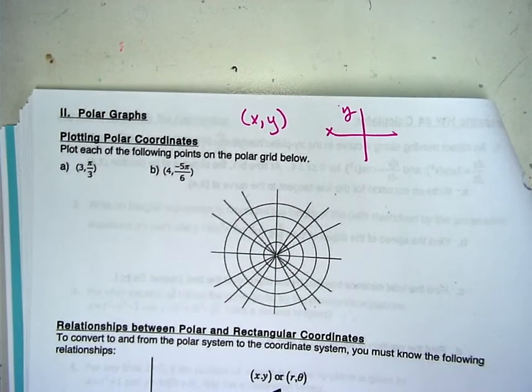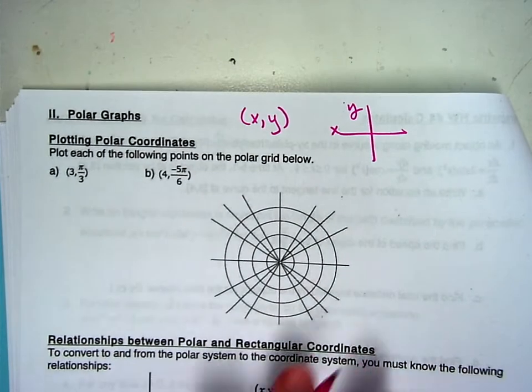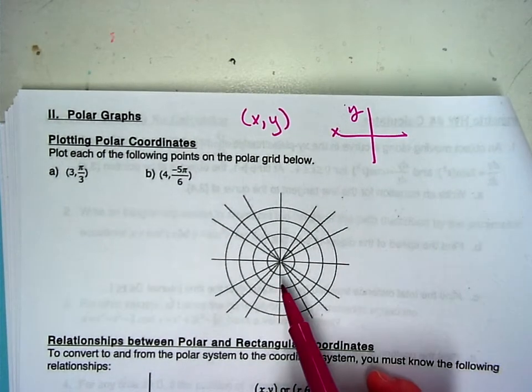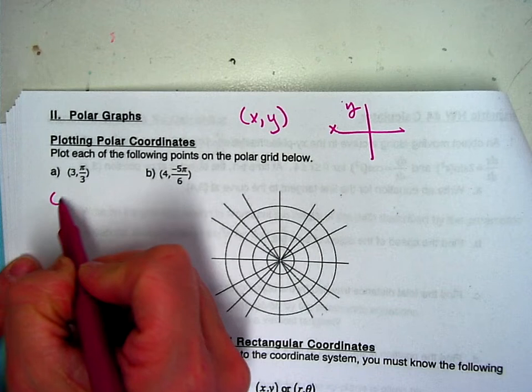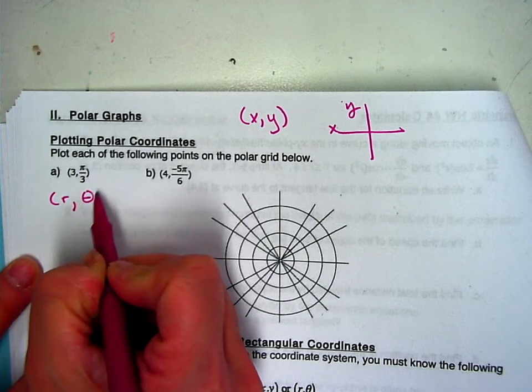Now what we're going to be doing is graphing on a polar curve. So this is what our polar graph looks like and your ordered pair is going to be your r and comma theta.